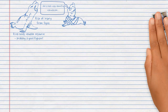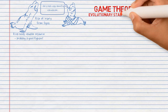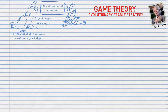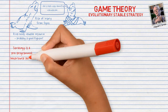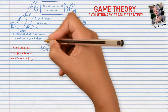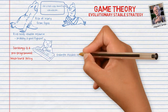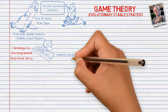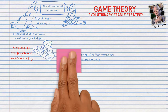Maynard Smith, together with G. R. Price and G. A. Parker, uses a branch of mathematics called Game Theory to analyze these decisions. He introduces the concept of Evolutionary Stable Strategy. When we talk about a strategy, we are speaking of a pre-programmed behavioral policy, because we are treating animals like survival machines with a pre-programmed computer controlling the muscles. For example: attack opponent; if he flees, pursue him; if he retaliates, run away.